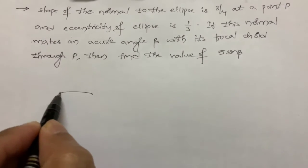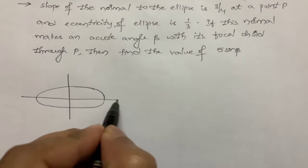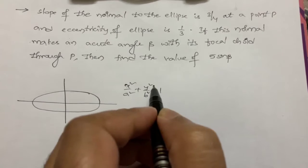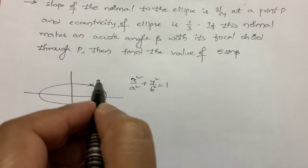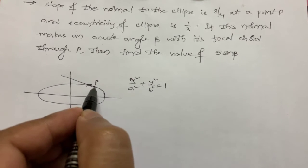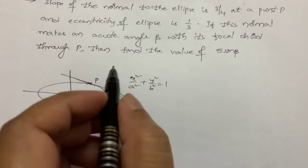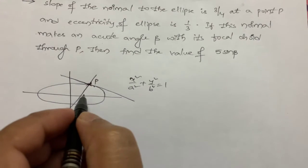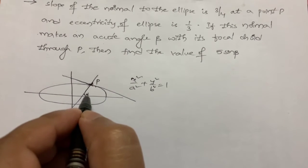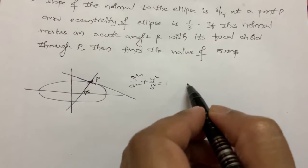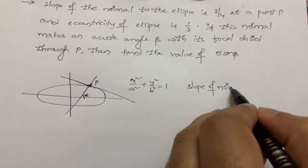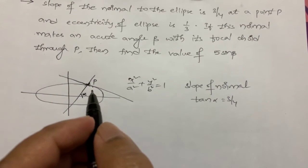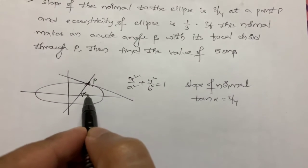We will assume the general standard form of the ellipse: x²/a² + y²/b² = 1. There is a point P, and through P we draw a tangent and at that point draw a normal. This normal has slope angle α, so tan α is equal to 3/4, which is given.